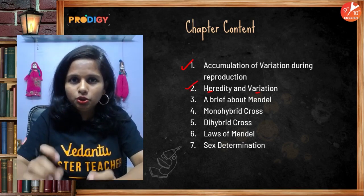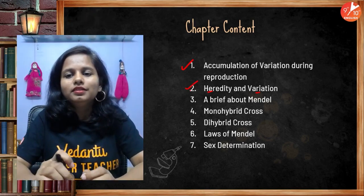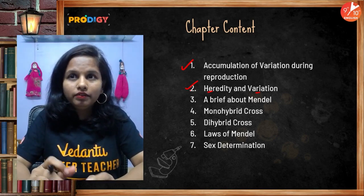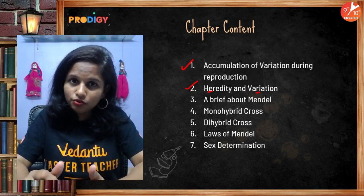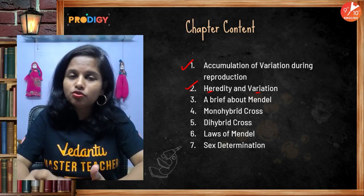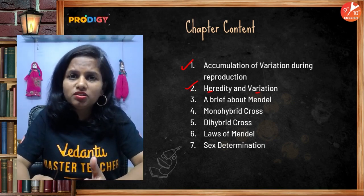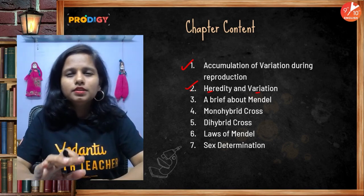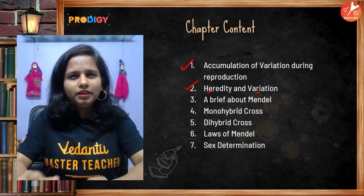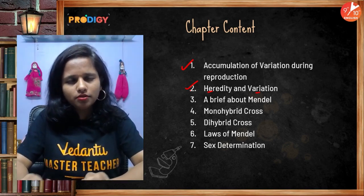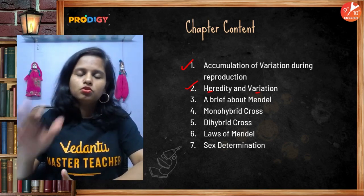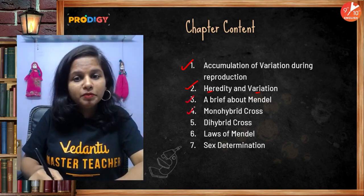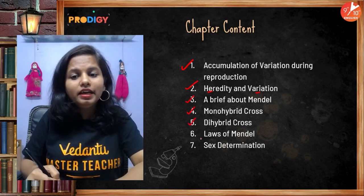The main contributor to genetics is Sir Gregor Johann Mendel. We will have a detailed discussion about the life story of Mendel, his contributions, what experiments he performed, the conclusions, and some application-based questions. This covers his two experiments — monohybrid and dihybrid cross.